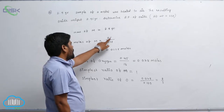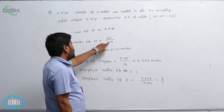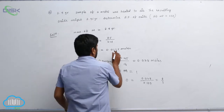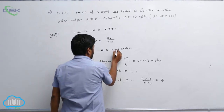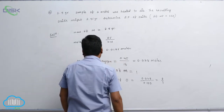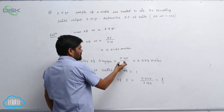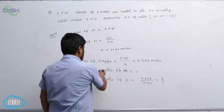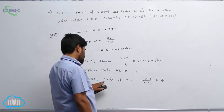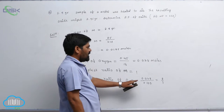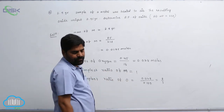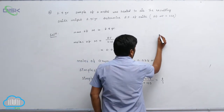Moles of metal equals 2.5 divided by 238, so the number of moles is 0.0105 moles. Moles of oxygen equals this value. Therefore, the simplest ratio of metal is assumed to be 1, and the simplest ratio of oxygen is 8 by 3.